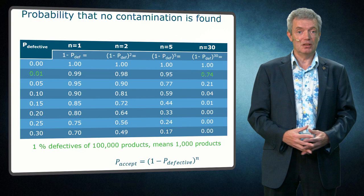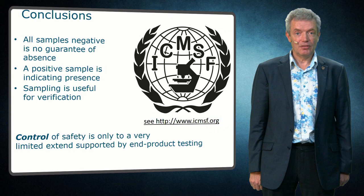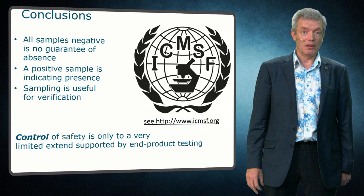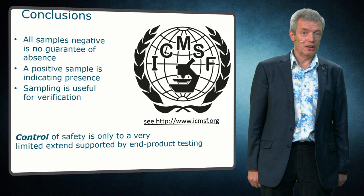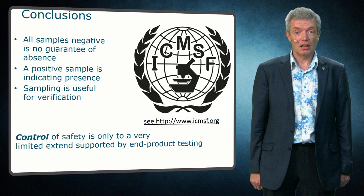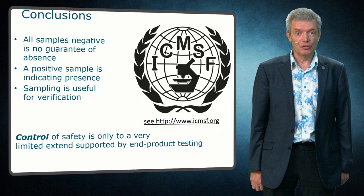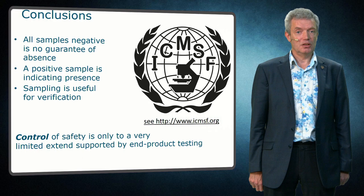To conclude: if all samples in the sampling plan are negative, this is not a guarantee of absence in the whole batch. On the other hand, if a positive sample is found, that does indicate presence in the lot. Thus while sampling and testing does not provide definite proof of absence in the whole batch, it is useful for finding big deviations and highly contaminated lots, and also useful to verify overall control of food safety. Further information and tools can be found on the ICMSF website.